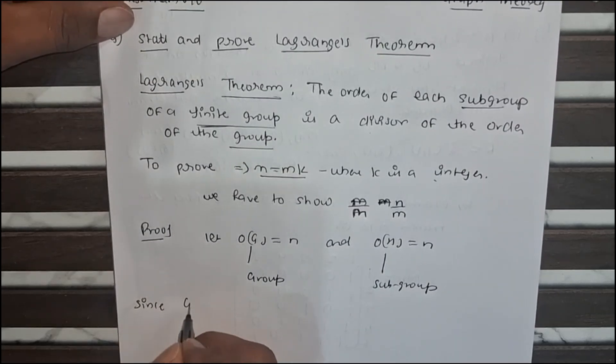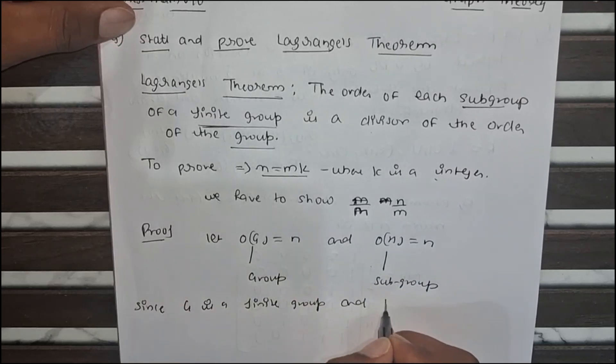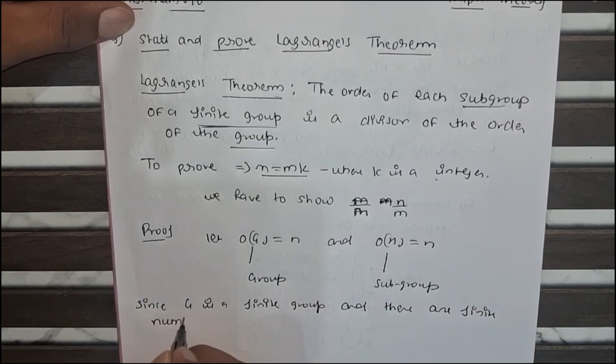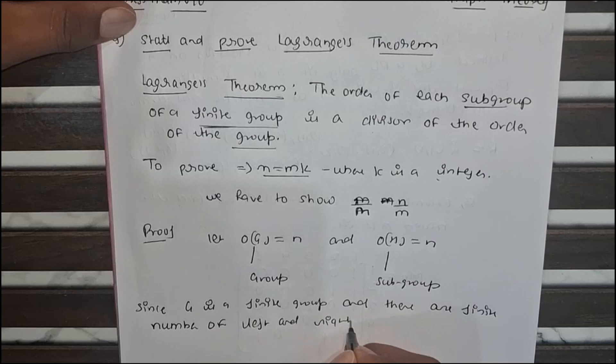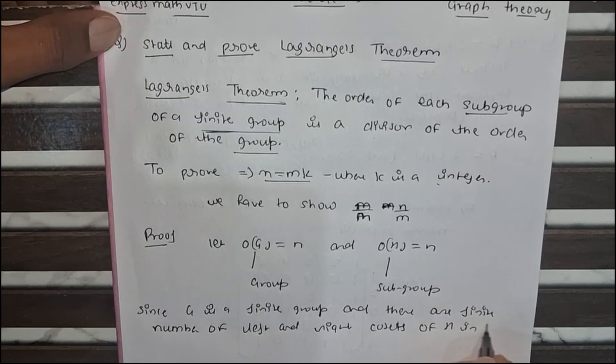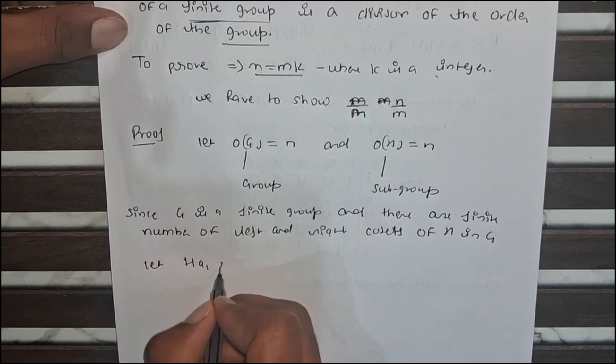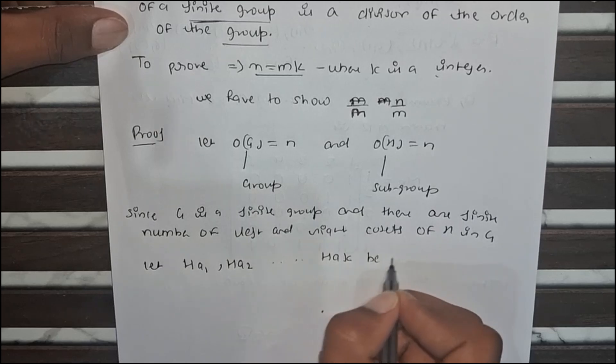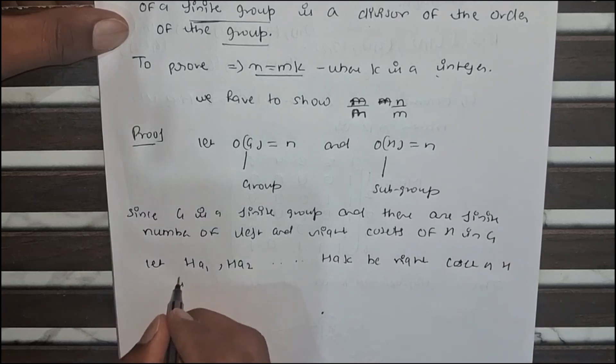Since g is a finite group, there are finite number of left and right cosets of h in g. So now let h of a1, h of a2, up to h of ak be right cosets of h in g.